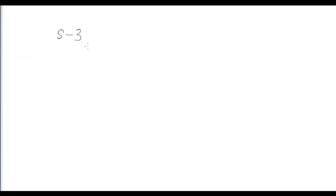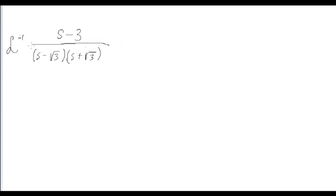In this video we are going to look at an example of how to find the inverse Laplace transform of a function. The example we're going to look at is the function s minus 3 divided by s minus square root of 3 times s plus square root of 3. We want to find the inverse transform of this function, written with L to the minus one — the function whose transform is the given function of s.